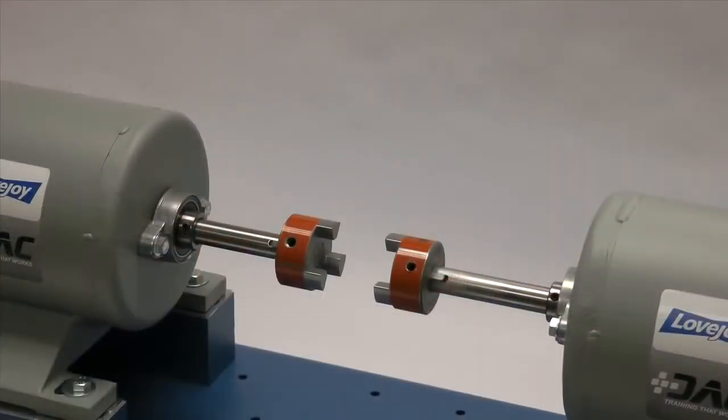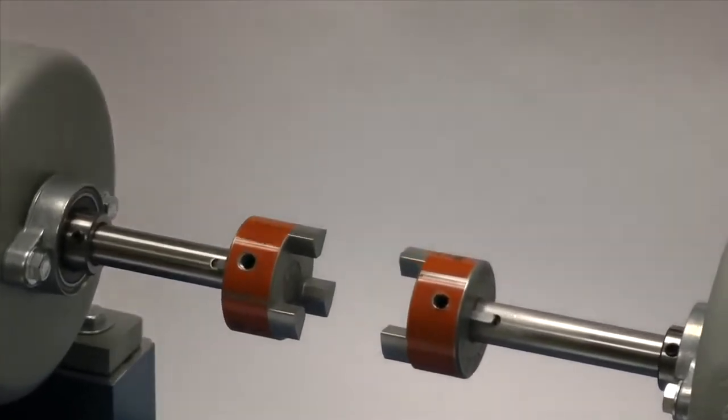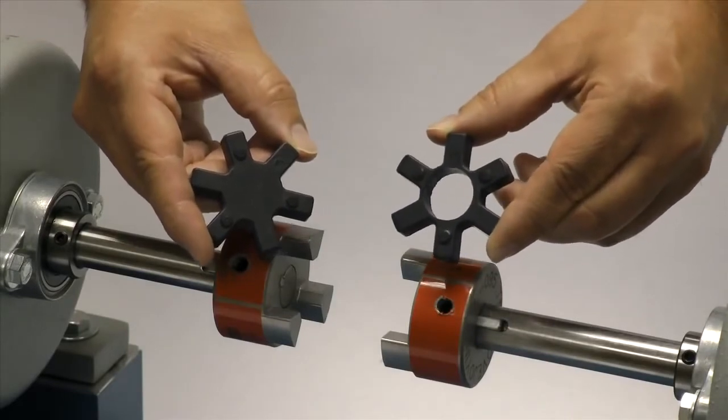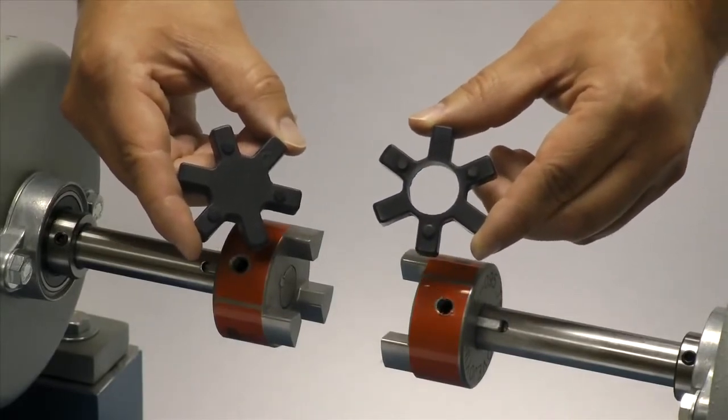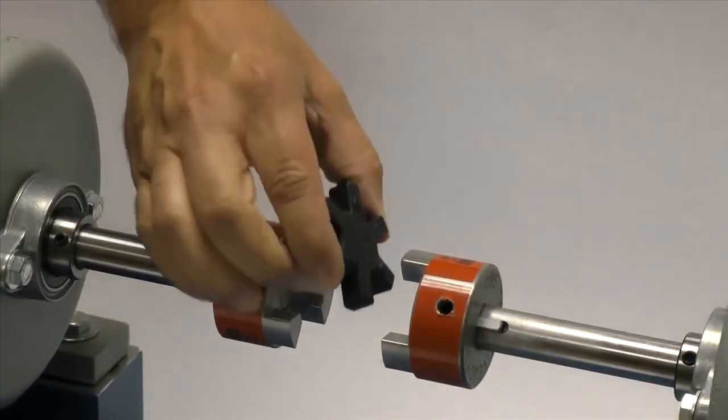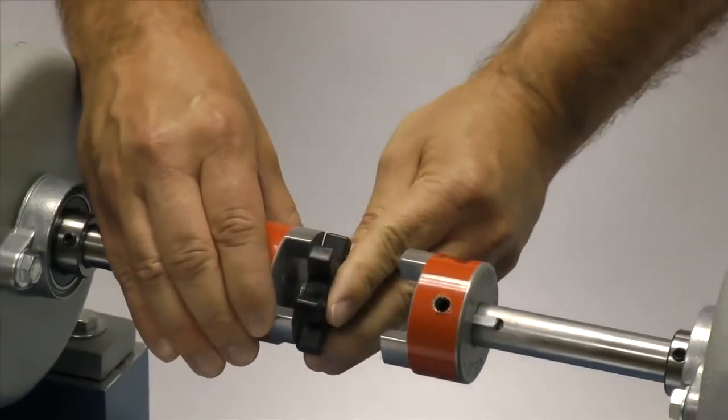Next, we will insert the spider into one of the jaw coupling hubs. If the final shaft separation is going to be less than the actual width of the spider, you may need to use an open center spider. Please remember that open center spiders are limited to 1800 RPM. For our installation, we will be using a closed center spider.